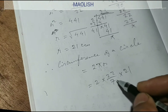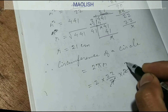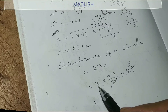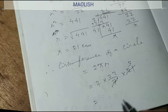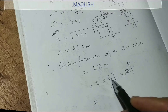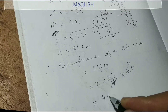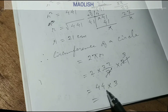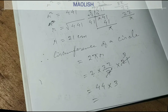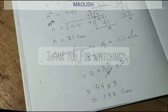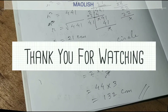Now for the circumference: 2 into 22 into 3 — so 2 into 22 is 44, and 44 into 3 is 132. So the circumference is 132 centimeters.